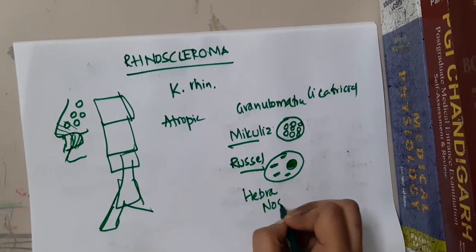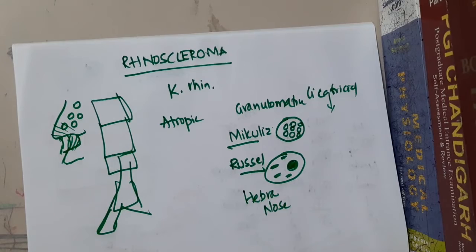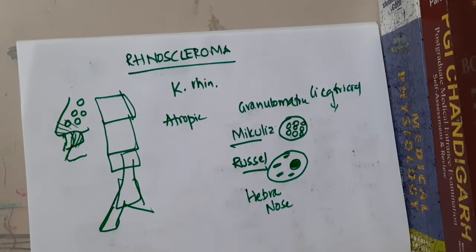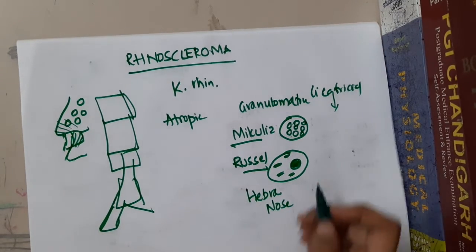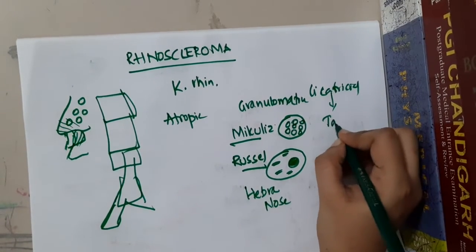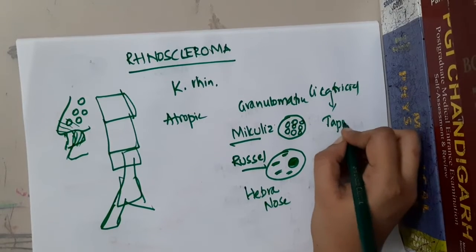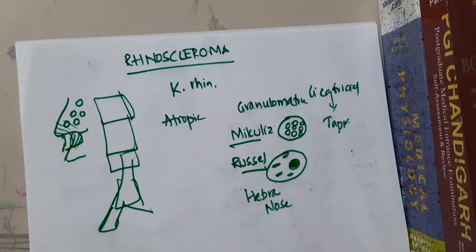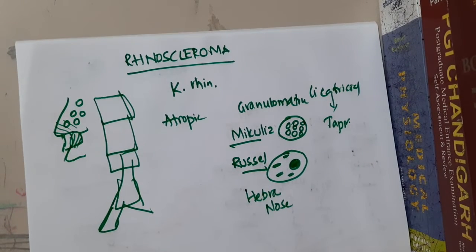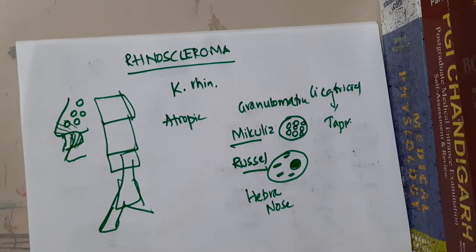In the cicatricial stage, there is formation of cicatrices, adhesions, and stenosis. You will see the presence of tapir nose. In this cicatricial phase, there will be subglottic stenosis causing respiratory distress.